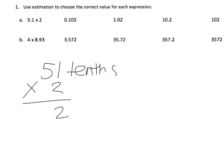2 times 1 is 2, 2 times 5 is 10, but now this does not give us the answer 102. It gives us 102 tenths.